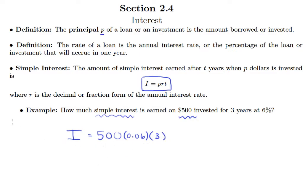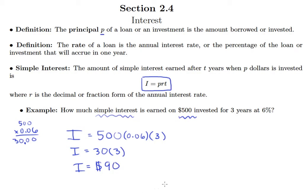We go through and multiply all this out. Take 500 times 0.06 — there are two decimal places — giving us 30. So I equals 30 times 3, and 30 times 3 is 90. So $90. If you're earning 6% interest and you invest $500, after three years $90 in simple interest is earned.